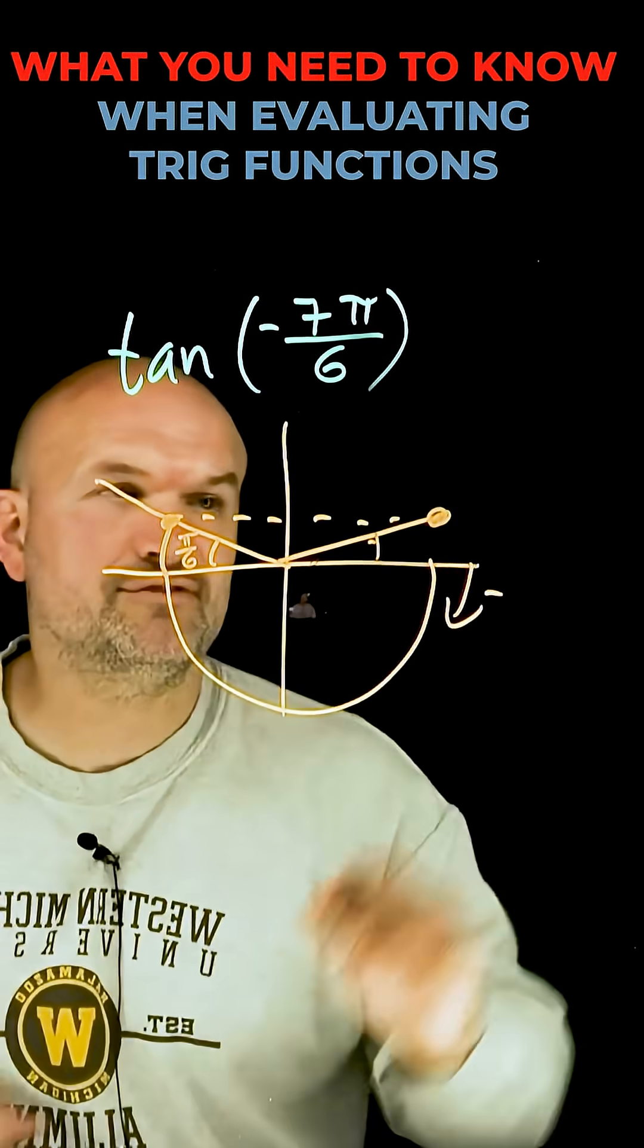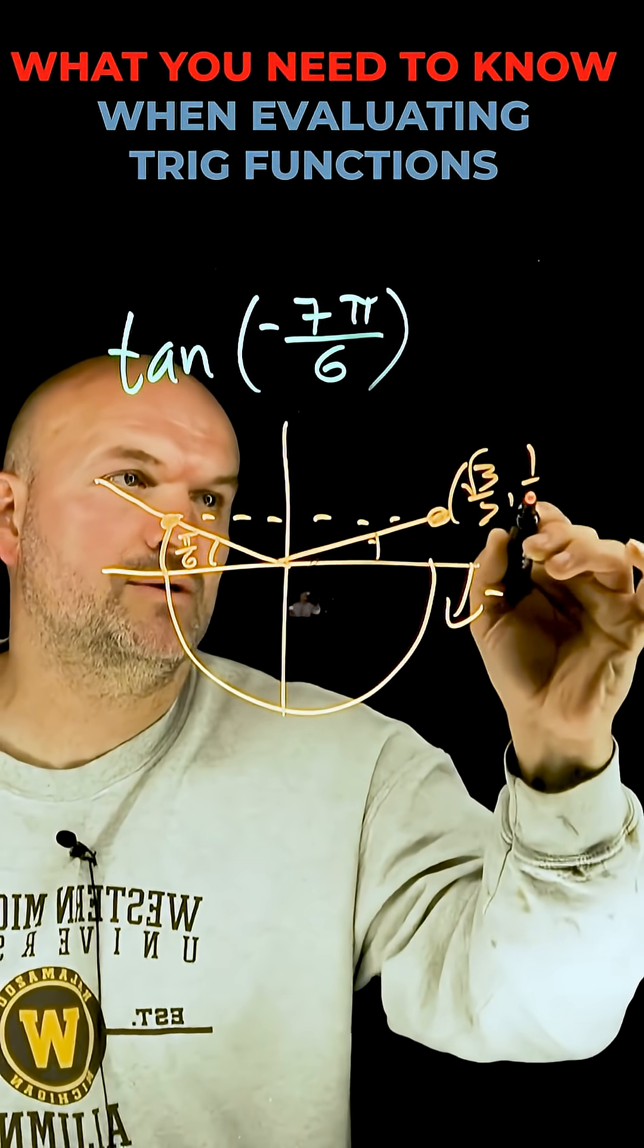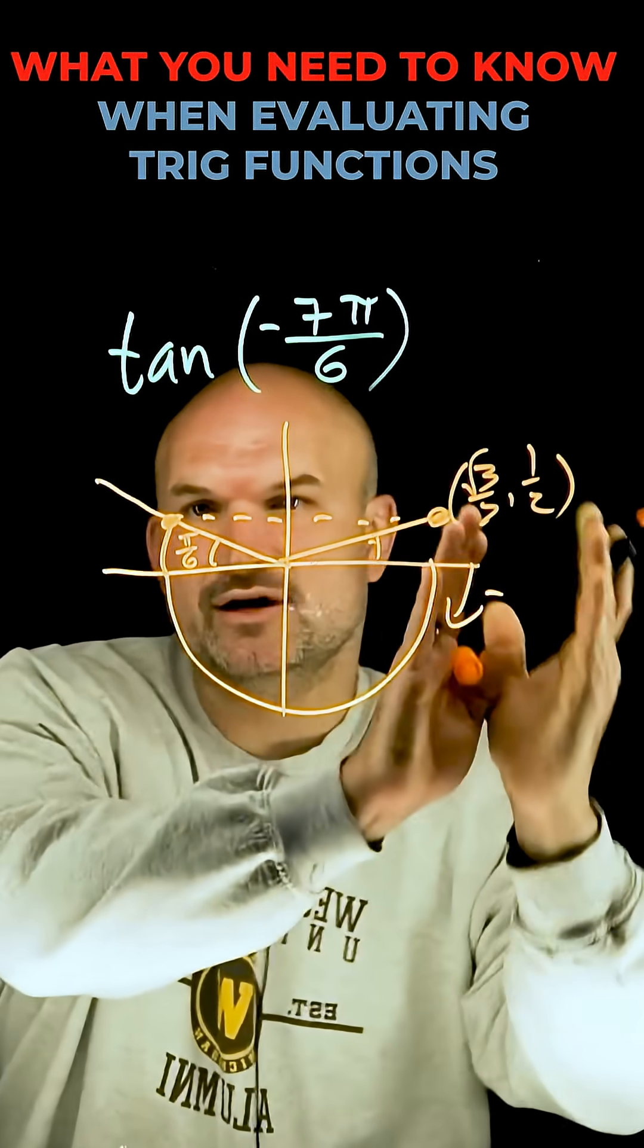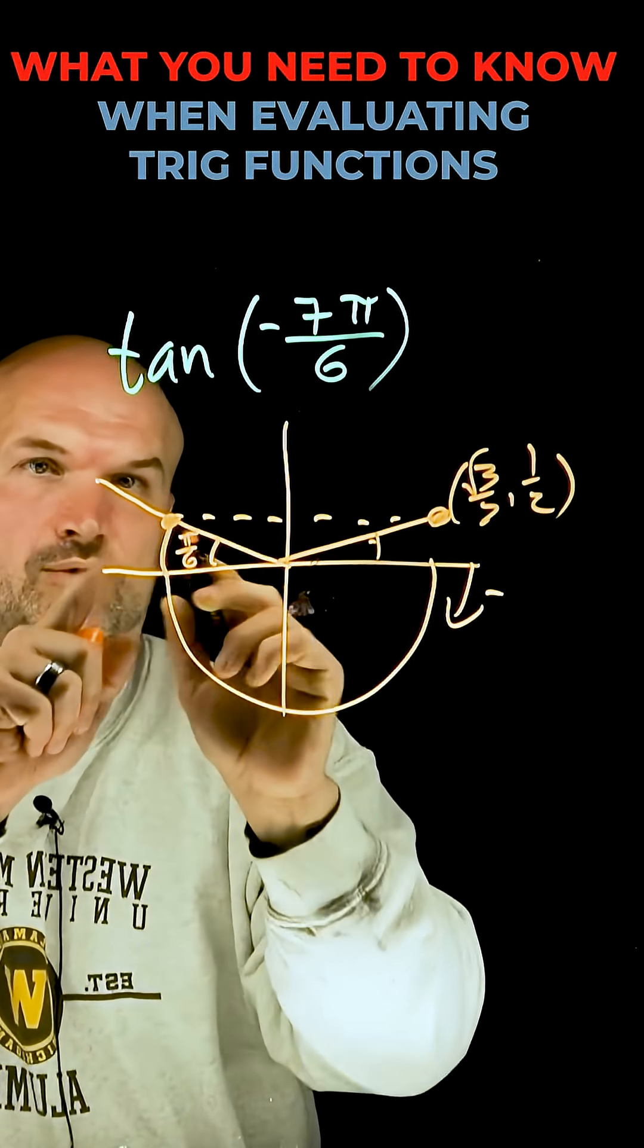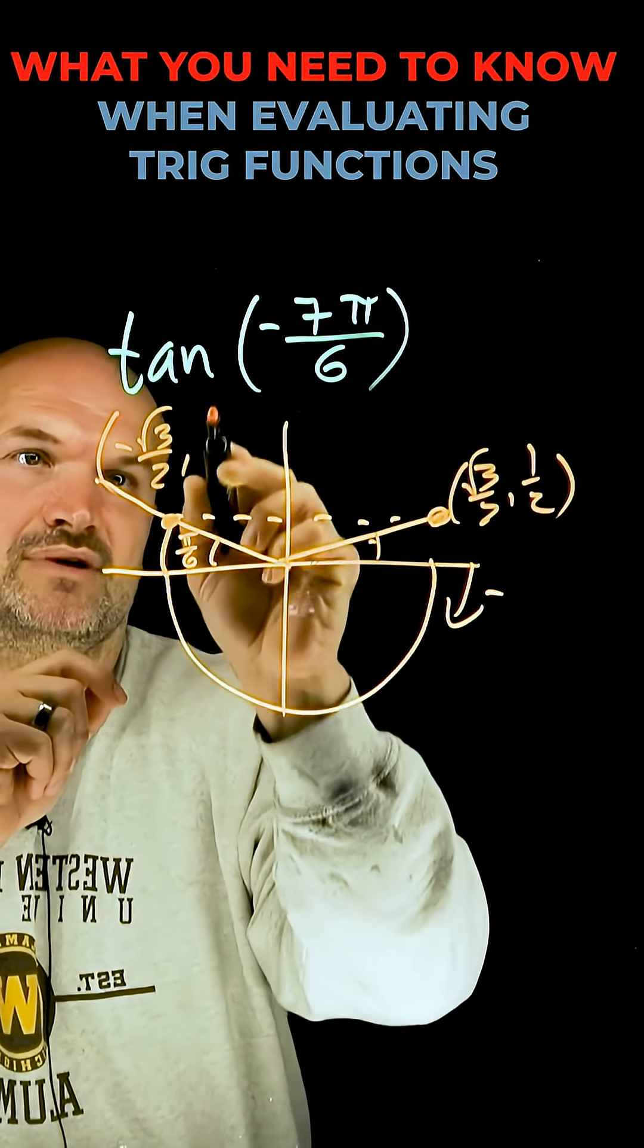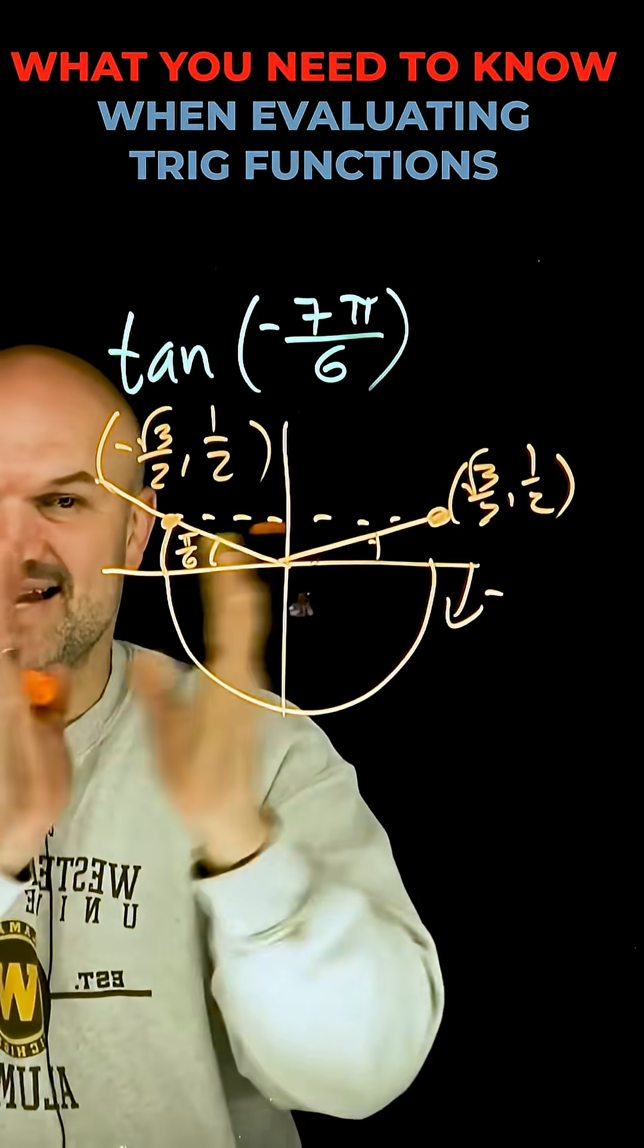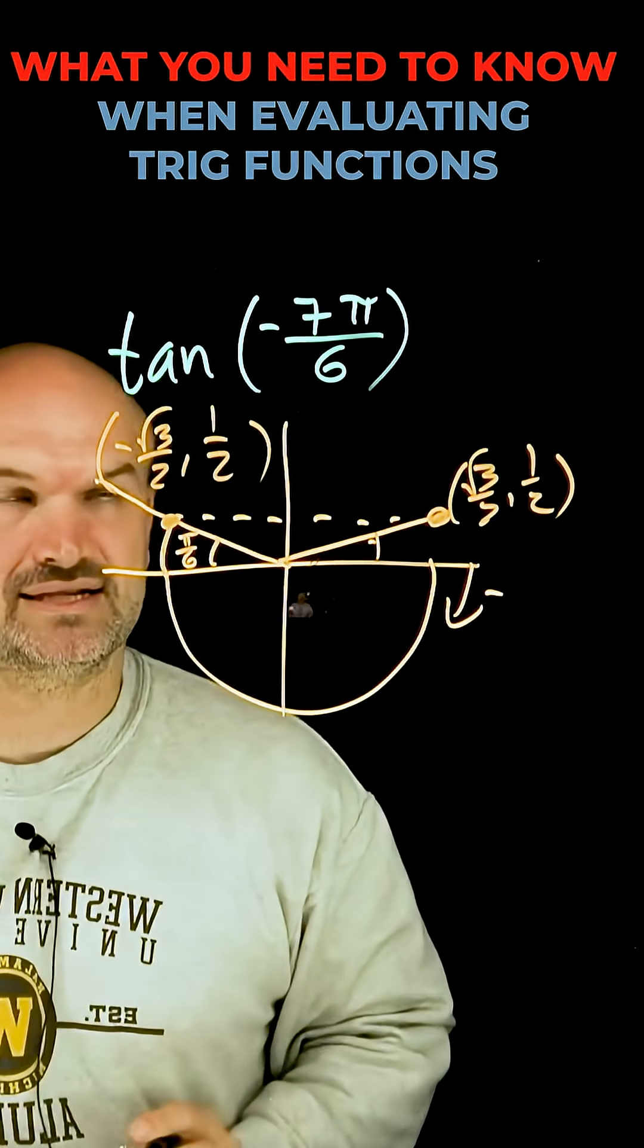Now what is this point in the first quadrant? This is going to be square root of 3 over 2 comma 1 half. So if we have an angle with the same reference angle, it's going to have the same coordinate point, but you can see it's in the second quadrant. Therefore I have a negative square root of 3 over 2 comma 1 half because we know x is negative in the second quadrant and y is going to be positive.